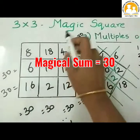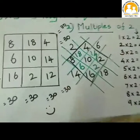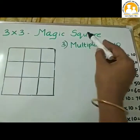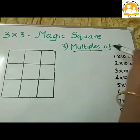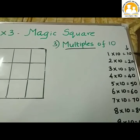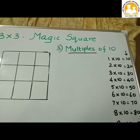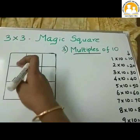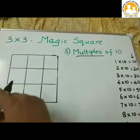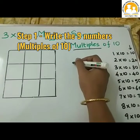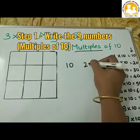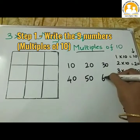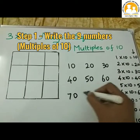We have completed the magic square using multiples of 2. Now let us see how to fill in a magic square using multiples of 10. Multiples of 10 come from the 10 times table: 10, 20, 30, 40, 50, 60, 70, 80, and 90. We are going to fill in this magic square so that each row, each column and diagonal add up to the same number.